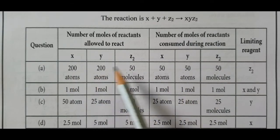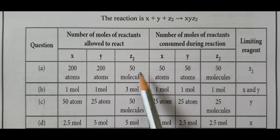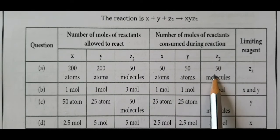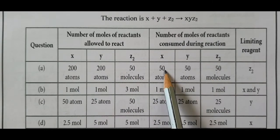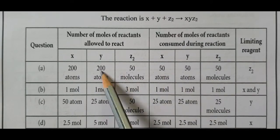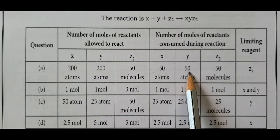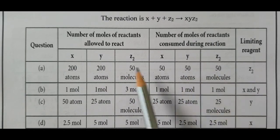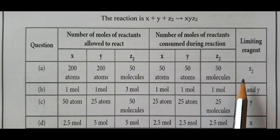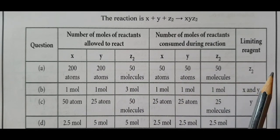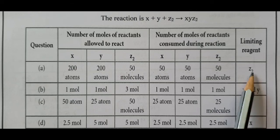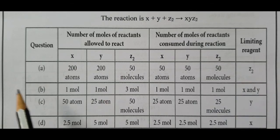When you subtract 50 from each, Z2 is completely used up. X and Y each have 150 remaining after subtracting. All 50 molecules of Z2 are used up. Therefore, the limiting reagent is Z2 in the first case.